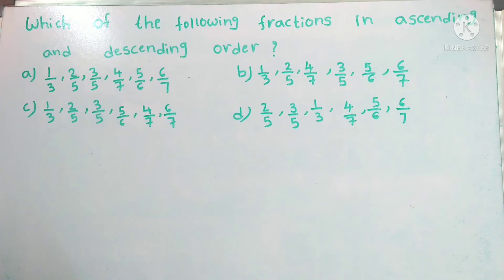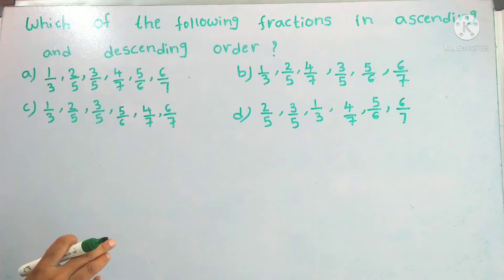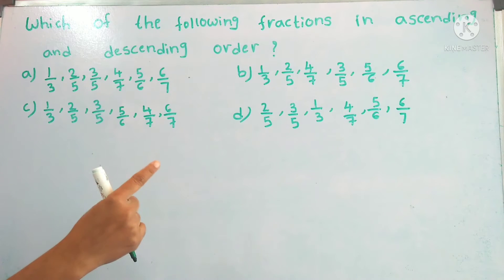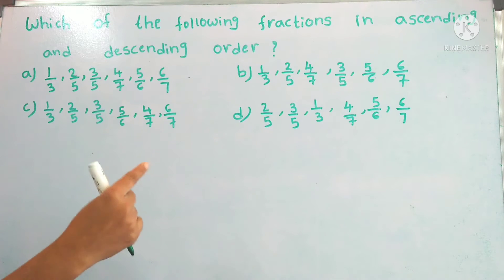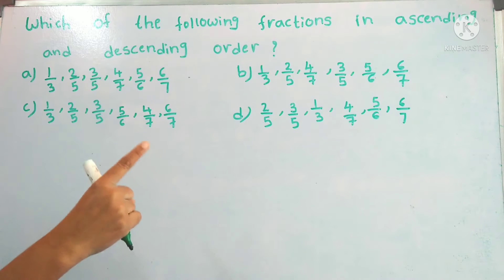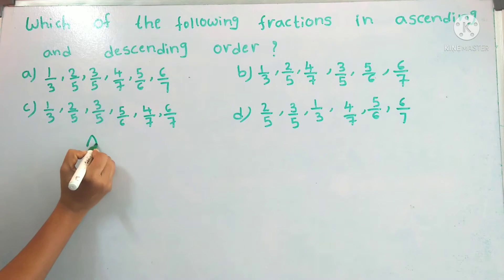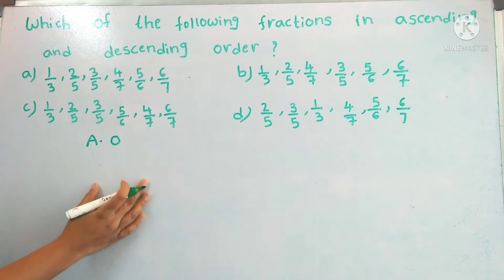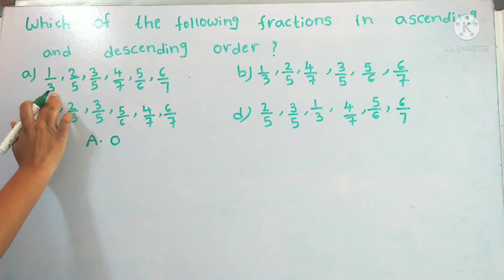In this video I am going to explain one important question for competitive exams. There are two methods: the LCM method and the division method. I am following the division method because it is easy. First, the order is ascending order — ascending order means small to big.